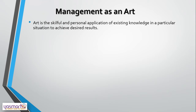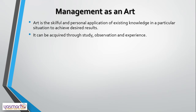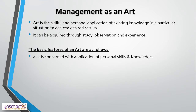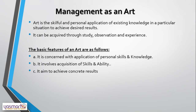What do we mean by art? Art is the skillful and personal application of existing knowledge in a particular situation to achieve desired results. It can be acquired through study, observation, and experience. The basic features of art include: it is concerned with application of personal skills and knowledge, it involves acquisition of skills and ability, it aims to achieve concrete results, it is a continuous practice which creates perfection, and art is a creative method which helps in the utilization of existing knowledge.